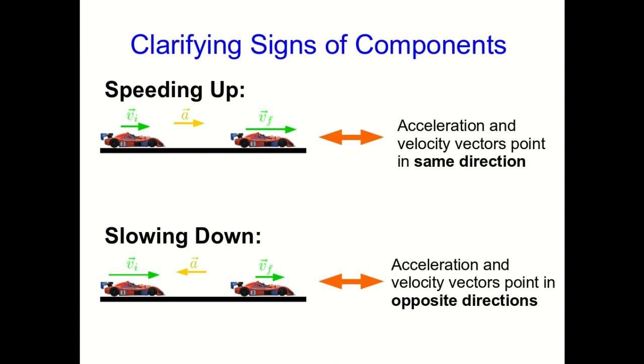We can't talk about components, though, until we define axes. If we define axes the way I have here, then for the car speeding up, its x component of velocity is positive, and its x component of acceleration is also positive. Whereas when it's slowing down with these axes, its vx is positive and its ax is negative. On the other hand, if I flip the axes around, all those signs change.